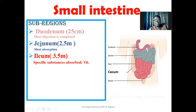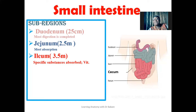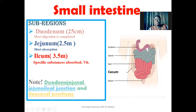The next region after the duodenum is the jejunum, the second subdivision. The jejunum is about 2.5 meters in length and is where most of the absorption occurs. The last and terminal region of the small intestine is the ileum, the longest region at about 3.5 meters in length. The ileum allows for the absorption of specific substances, including vitamins. The ileum is continuous with the cecum, which is the initial segment of the large intestine.